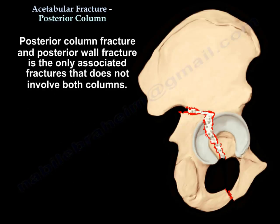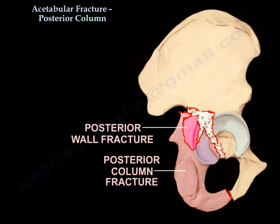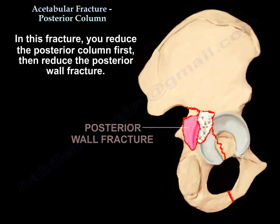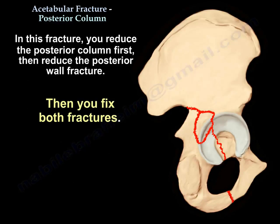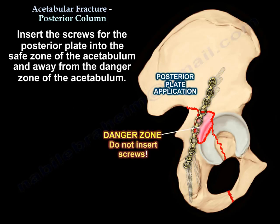Posterior column and posterior wall fracture — it is the only associated fracture that does not involve both columns. In this fracture, you reduce the posterior column first, then reduce the posterior wall, and then fix both. Insert the screws for the posterior plate into the safe zone of the acetabulum and away from the danger zone of the acetabulum.